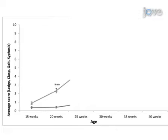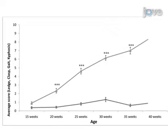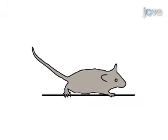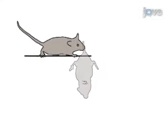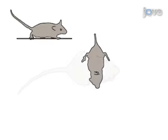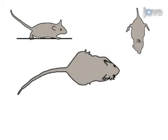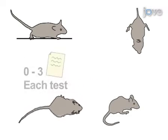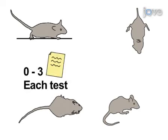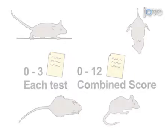We have developed a composite phenotype scoring system for the evaluation of disease severity and progression in mouse models of cerebellar ataxia. We perform four different tests: the ledge test, hind limb clasping, gait, and kyphosis, using a scale of 0 to 3 for each test, for a combined score of 0 to 12 for all four measures.